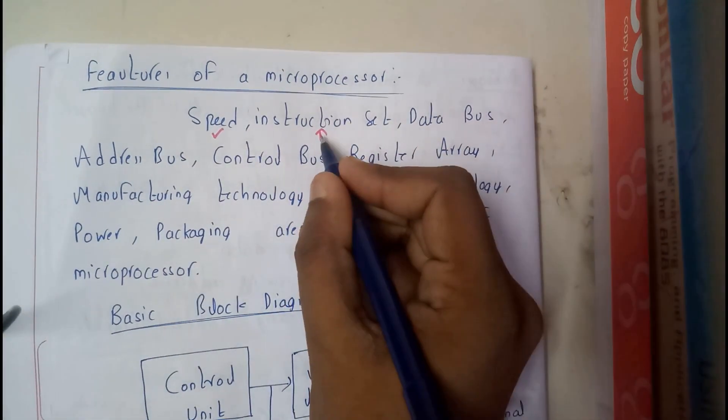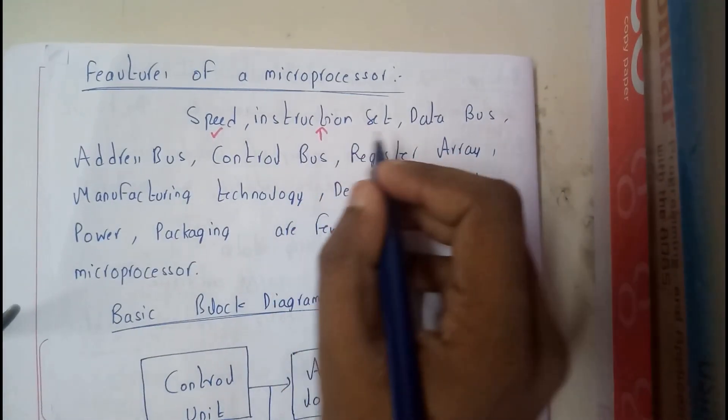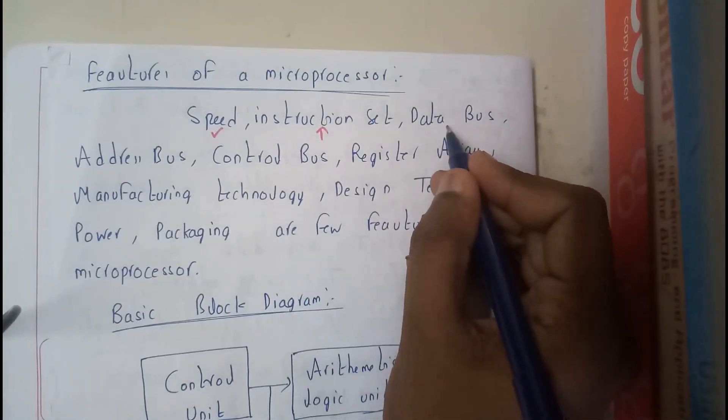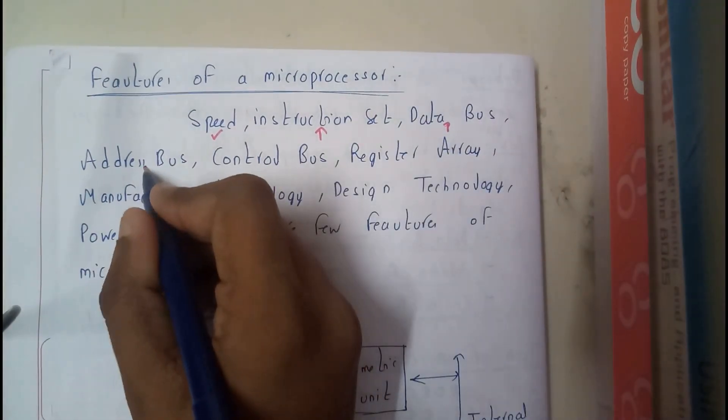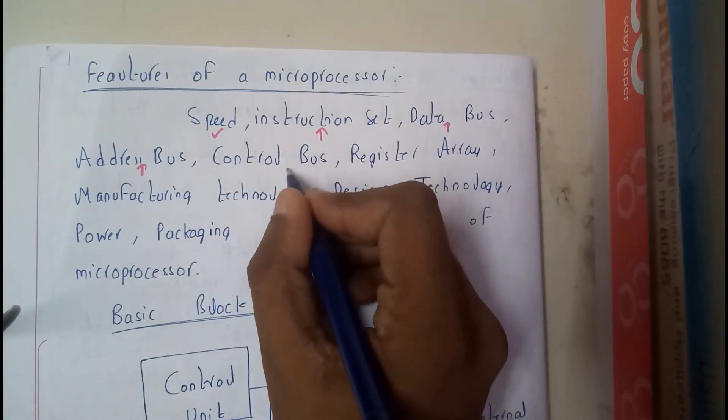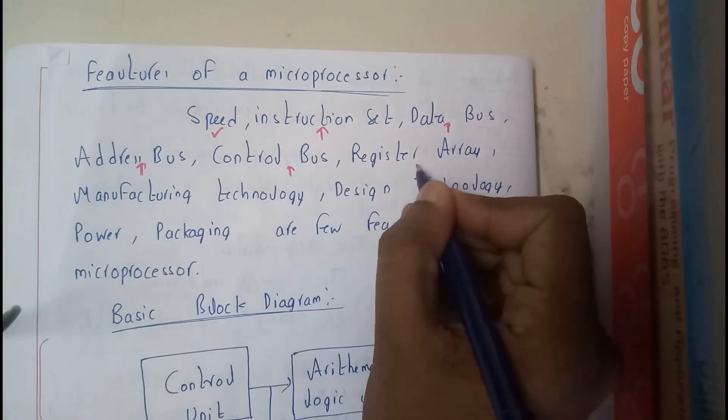Data buses should be more, address bus should be more, control bus should be more, registers should be more.